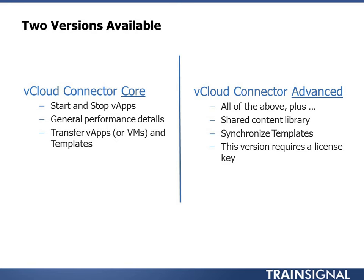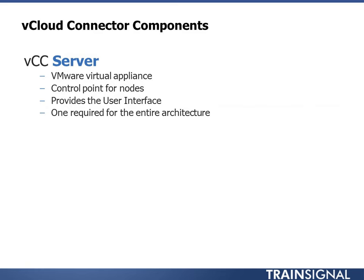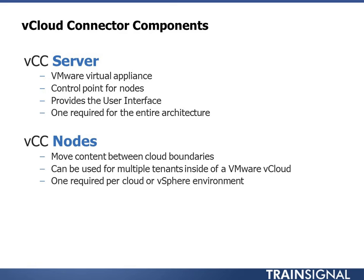We're going to focus on the architecture and setting up the core product. There are three main components within vCloud Connector. The first is the VCC Server — an OVF you download from VMware. It's a virtual appliance and the control point for what's called a node in the environment. It provides the user interface. You could draw an analogy to the way vCenter manages vSphere hosts: the vCloud Connector Server manages VCC nodes. A node is the edge point that lives inside your vSphere environment, cloud environment, or public cloud. You need a node in every cloud environment, but only one server to manage all the nodes. The node has disk space allocated as a transfer repository.